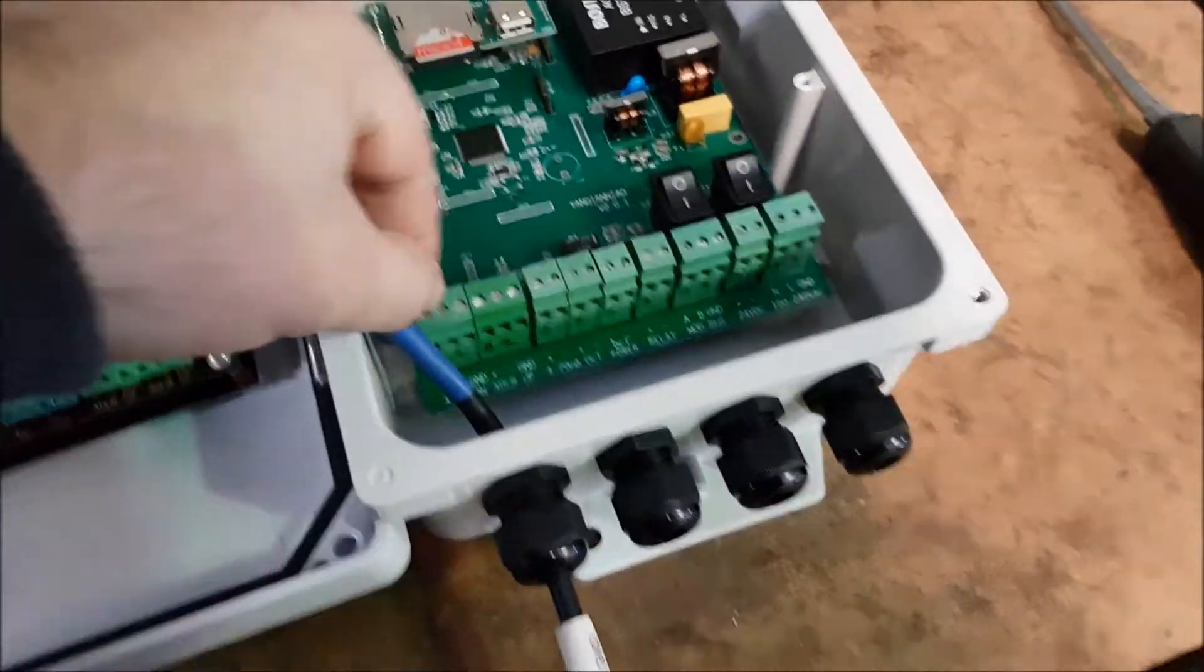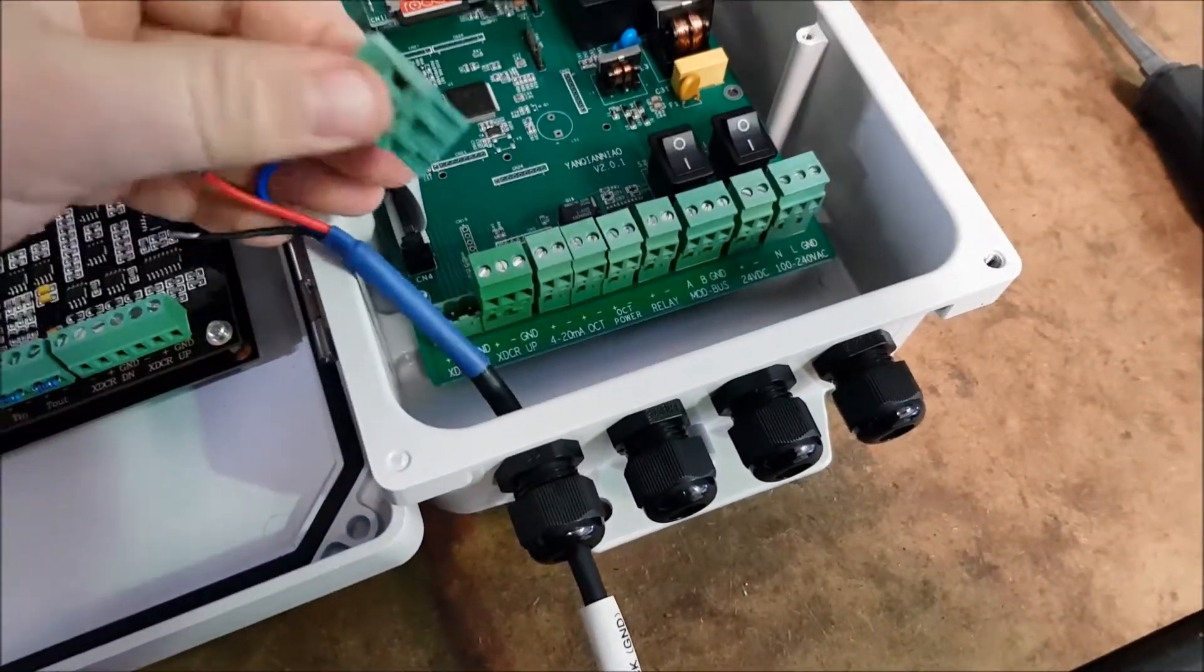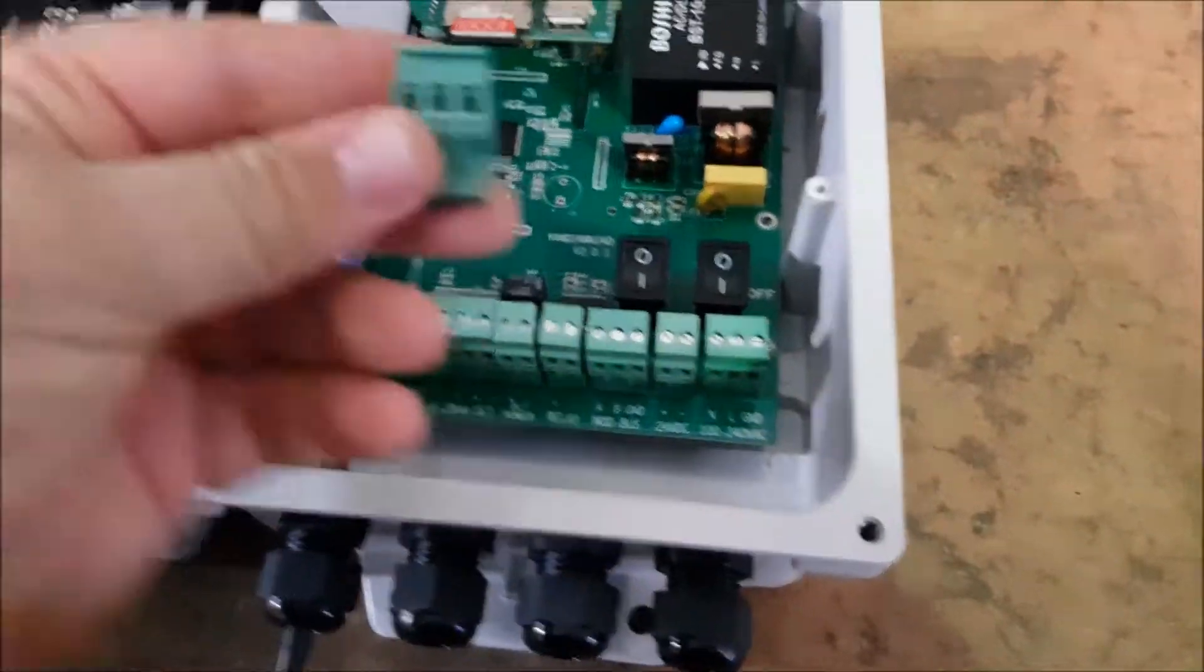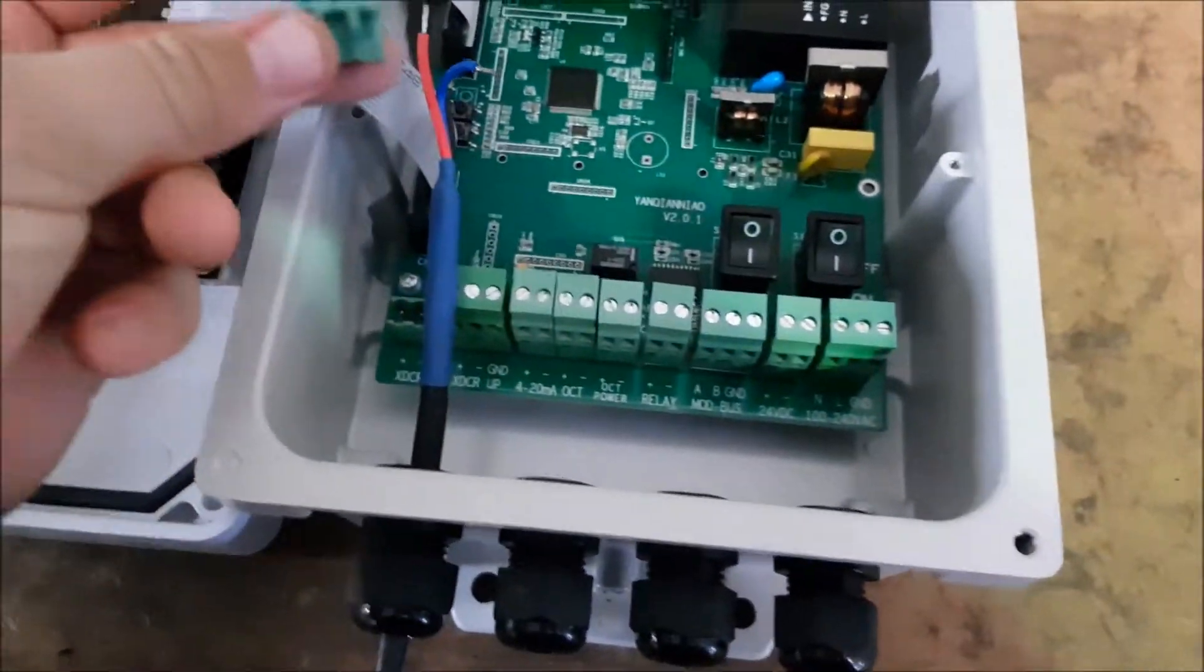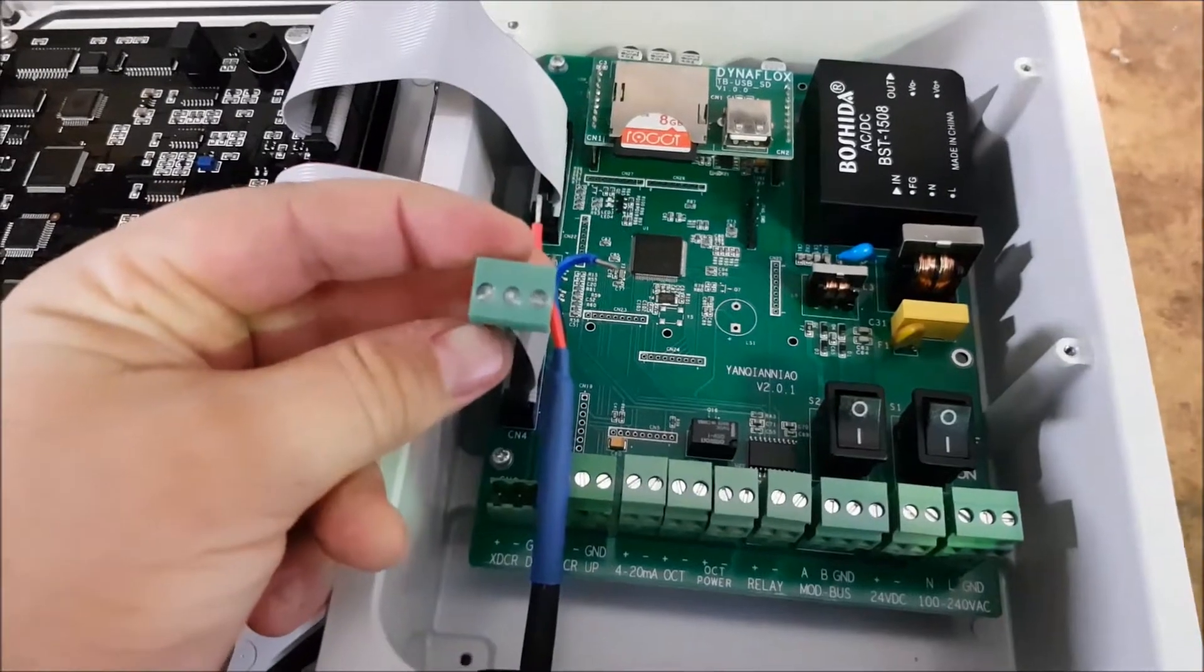OK, so now you can remove the connector. And we just basically need to insert the wires into here and tighten up the screws. So I'll do that now. OK, so now my transducers are installed into the flow meter.